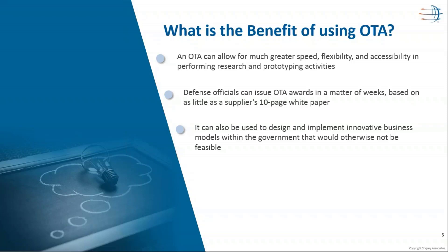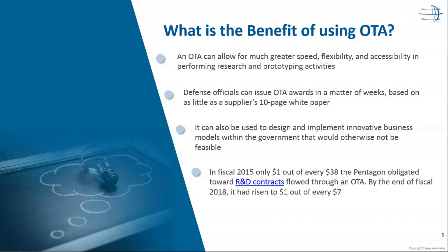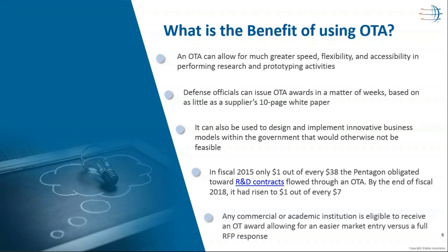OTA can be used to design and implement innovative business models within the government that would otherwise not be feasible. In this research and prototype development, we now have an entry point for small businesses and non-traditional businesses, which you almost have to have on your team. In 2015, one out of 38 Pentagon obligated R&D dollars went through OTA. By late 2018, it was one out of seven — you can see the trend is huge, especially in the military arena. Any commercial or academic institution is eligible to receive an OTA award, so a lot of small businesses and universities are getting involved.